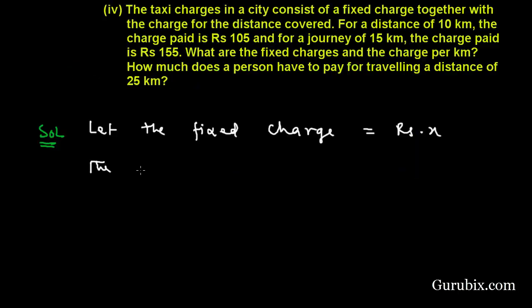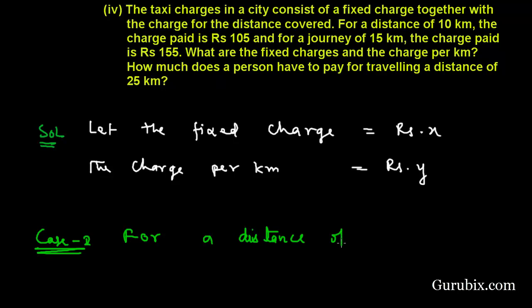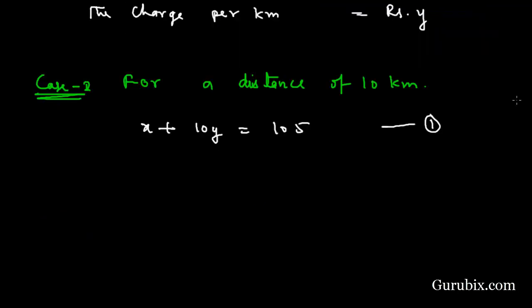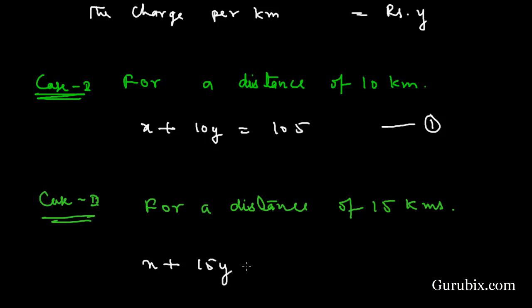In case one, for a distance of 10 kilometers, X is the fixed charge, 10 kilometers is the distance, so it will be 10Y, and the total charge is rupees 105. This is our equation number one. Same in case two, for a distance of 15 kilometers, X is the fixed charge, 15Y is the variable charge per kilometer, and the total charge is 155. This is our equation number two.